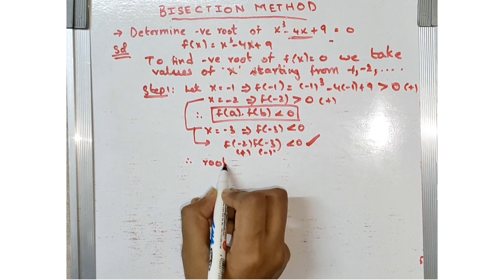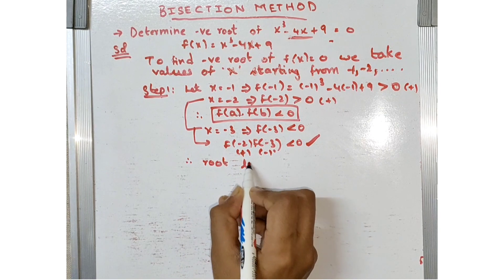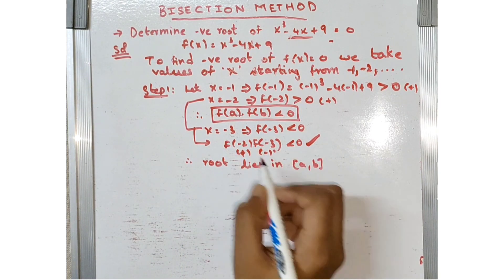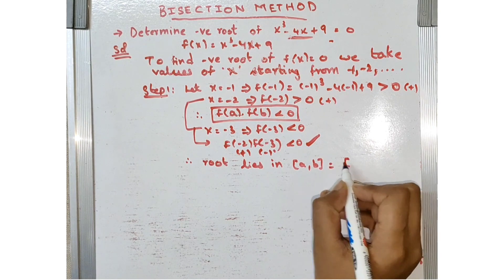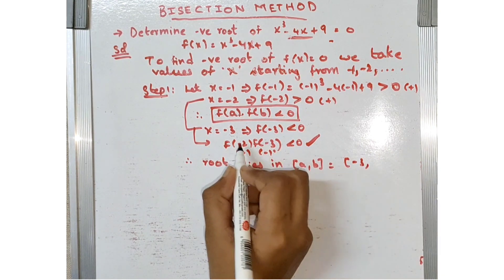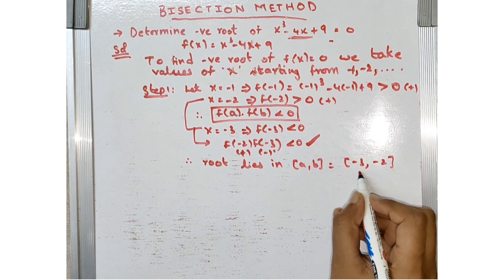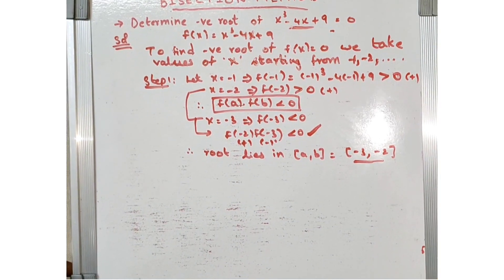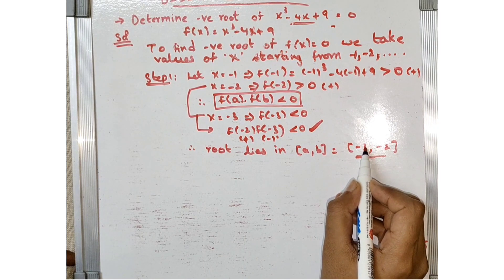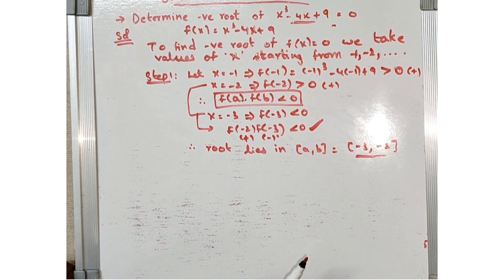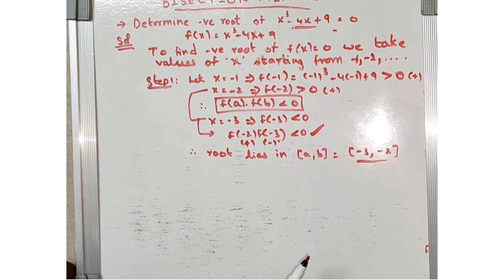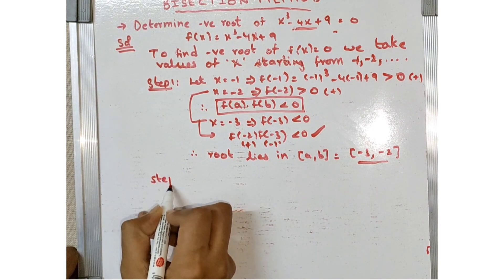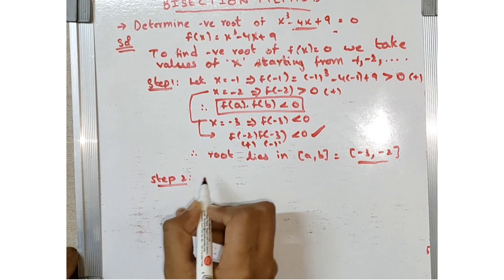Therefore the root lies in (a, b), where a = -3 and b = -2. The root lies between these two values. Our next step is to find the root that lies between -3 and -2 by doing successive approximations.